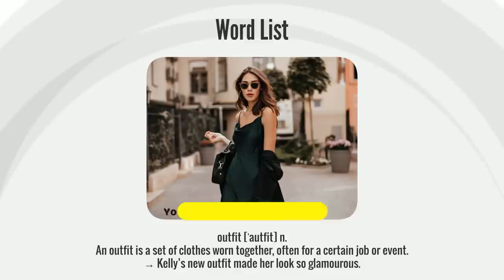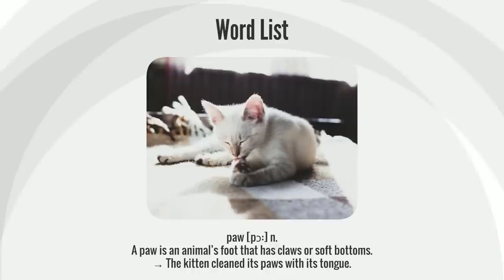An outfit is a set of clothes worn together, often for a certain job or event. Callie's new outfit made her look so glamorous.